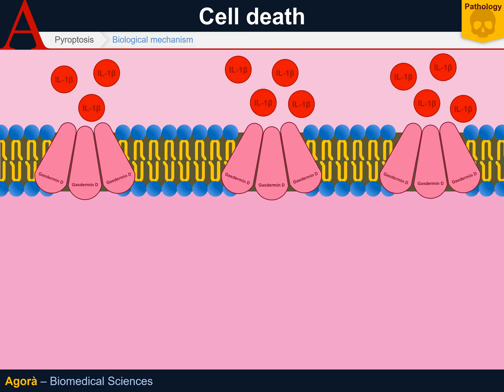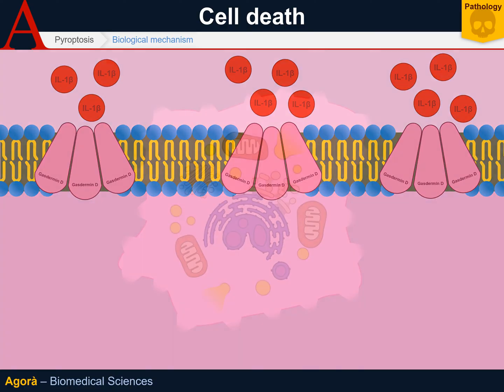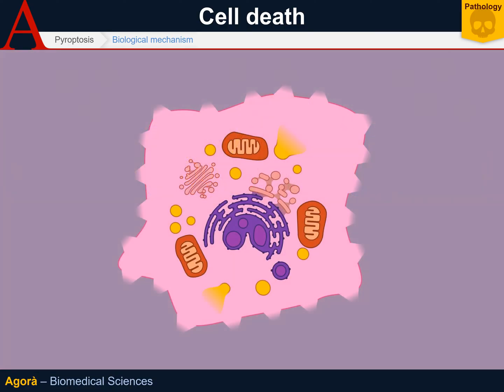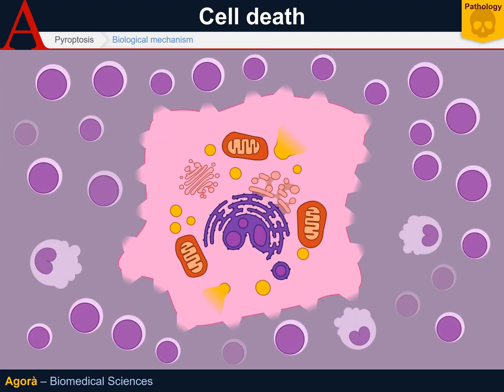Hence, as a result of this type of death, there is a very large amount of interleukin-1-beta, which represents one of the primary inflammatory cytokines, and therefore the number of inflammatory cells attracted is gigantic.